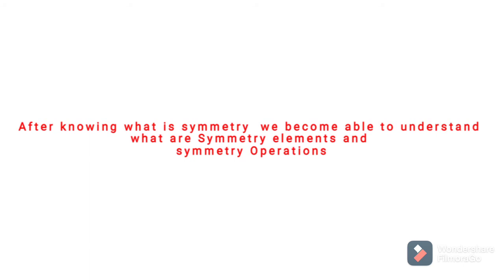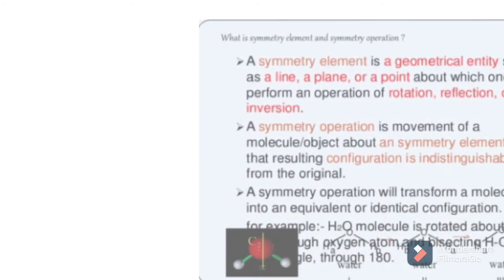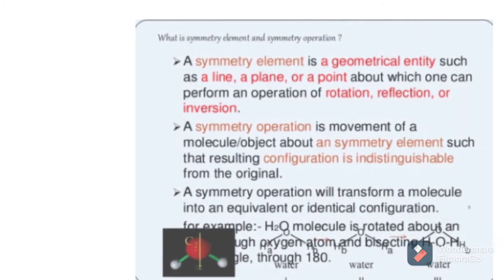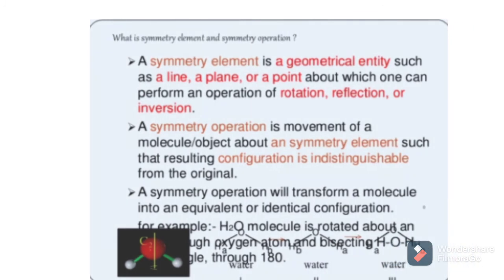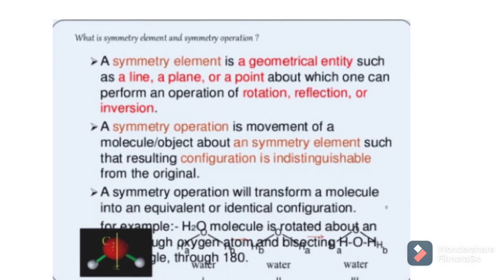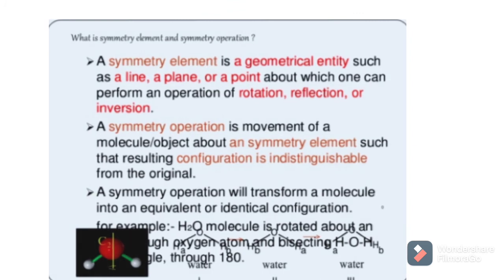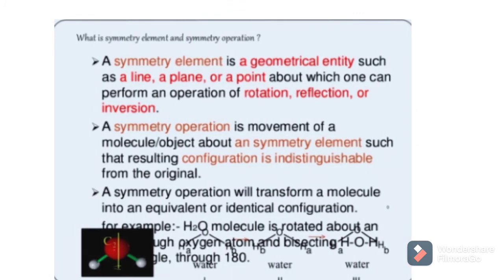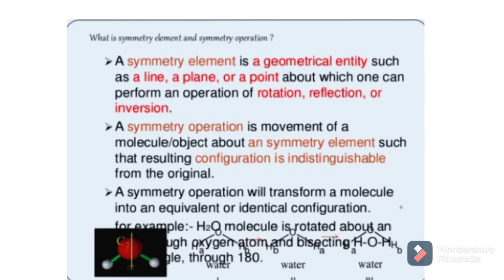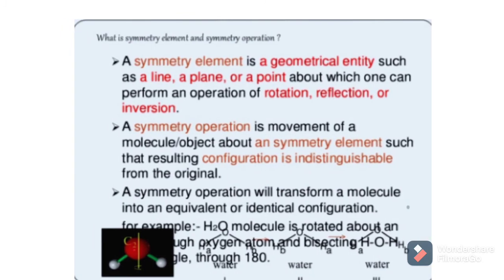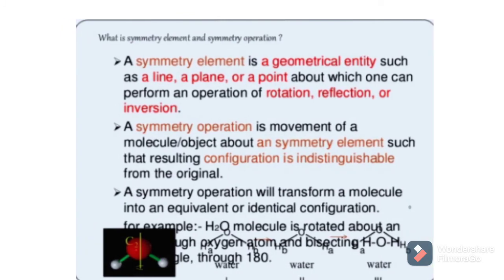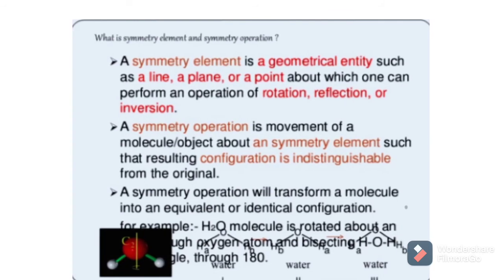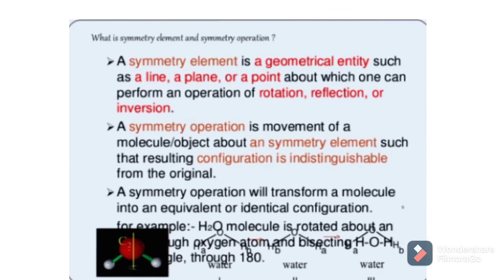Now we will look at symmetry elements and symmetry operations. A symmetry element is a geometrical entity such as a line, a plane, or a point about which one can perform an operation of rotation or inversion.